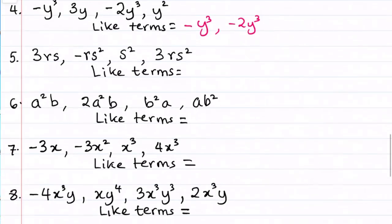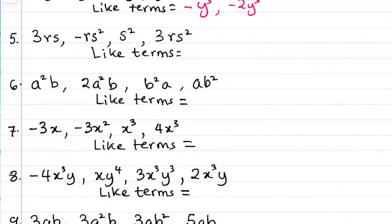Now for number 5. We have 3rs, minus rs squared, s squared, 2rs squared. So looking at it, we have similar terms in minus rs squared, and 3rs squared.